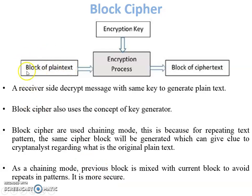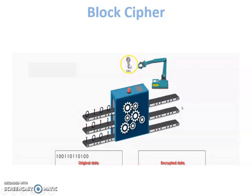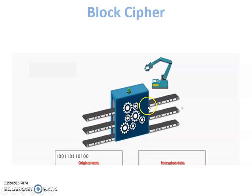So the first block generates the first cipher text block. Whenever the second block of plain text is given to the encryption process, the previous cipher text block is also used as input to the encryption process — this is the chaining mode, and it is more secure compared to stream cipher. This is the animation of block cipher showing fixed size blocks. The key is input and it generates the same size cipher text as the plain text block.